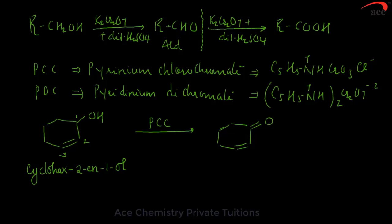PCC can be used to oxidize primary alcohol as well as secondary alcohol. Primary alcohol will give you aldehyde, secondary alcohol will give you ketone. The advantage is, this will stop the reaction till aldehyde or ketone stage, thereby preventing the further oxidation to carboxylic acids.